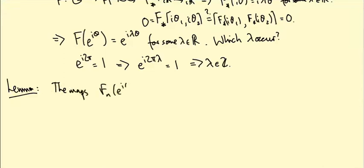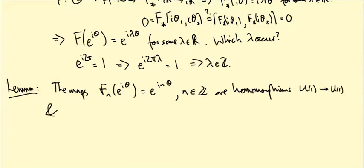The maps F_n of e to the i theta equals e to the i n theta, where n is an integer, are homomorphisms from U(1) to U(1), and every smooth homomorphism is one of these.